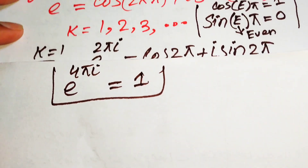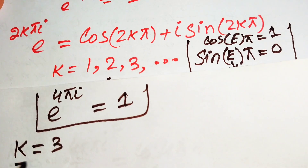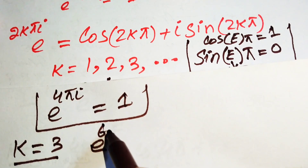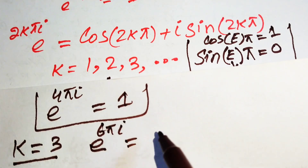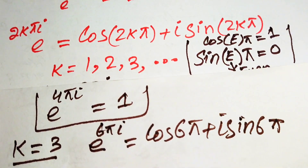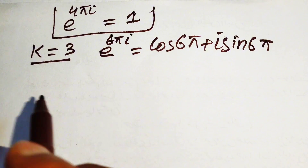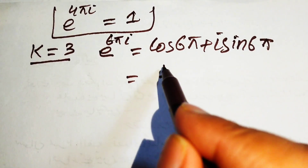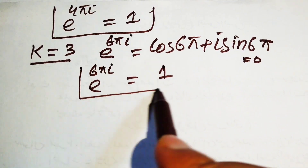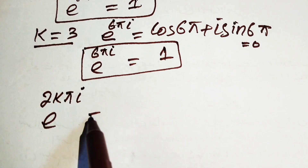For k equals 3: e to the power of 6 pi iota equals cos 6pi plus iota sin 6pi. Since 6pi is an even multiple of pi, cos 6pi equals 1 and sin 6pi equals 0, so e^(6πi) equals 1. Generally, the value of e to the power of 2k pi iota equals 1 for all integer values of k.